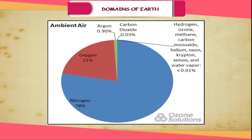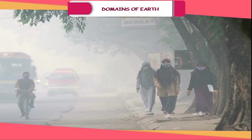Air is an abundant mixture of many gases. The most abundant of these gases are Nitrogen at 78%, Oxygen at 21%, and inert gases at less than 1%. Water vapor and dust particles are also present in air.